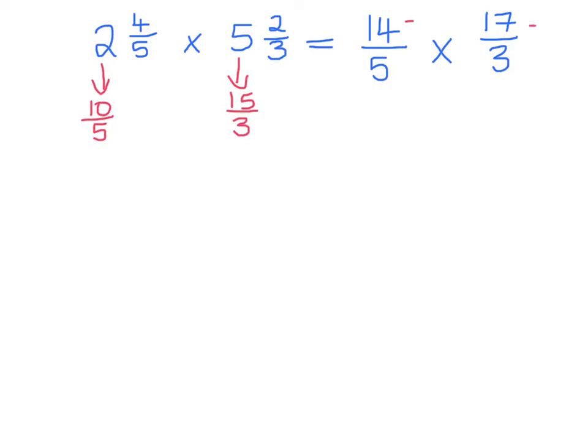Now perform the multiplication. Did you get this? 238 was got by multiplying 14 by 17, and 15 was got by multiplying 5 by 3.